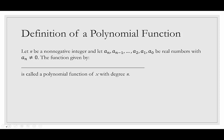We're going to let n be a non-negative integer — non-negative means it can't be negative, so it could be zero, one, two, three, four, five, and so on. Integer means it's a whole number including zero. We let a sub n, a sub n minus one, down to a sub two, a sub one, a sub zero be real numbers where a sub n is not equal to zero. A polynomial function is a function f(x) equal to a sub n times x to the n, plus a sub n minus one times x to the n minus one, plus more terms, down to a sub two times x squared plus a sub one times x plus a sub zero.